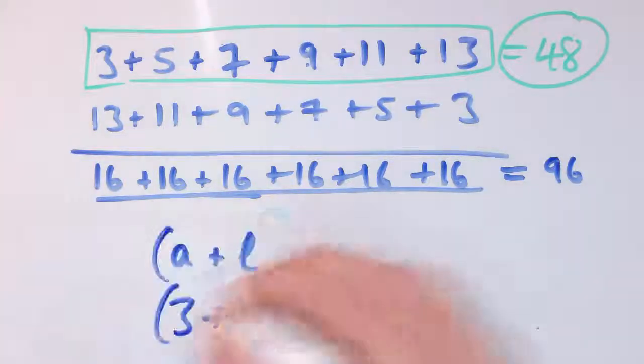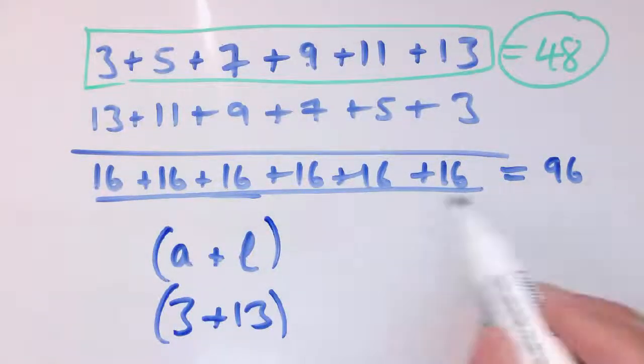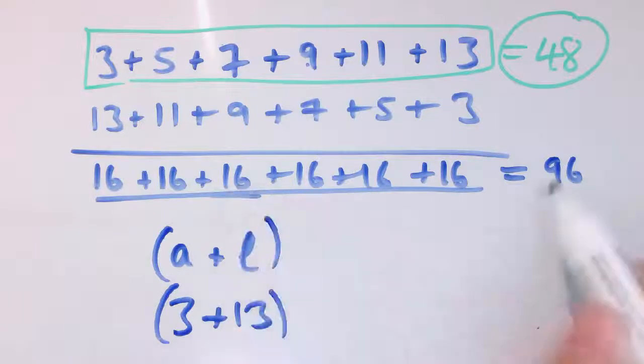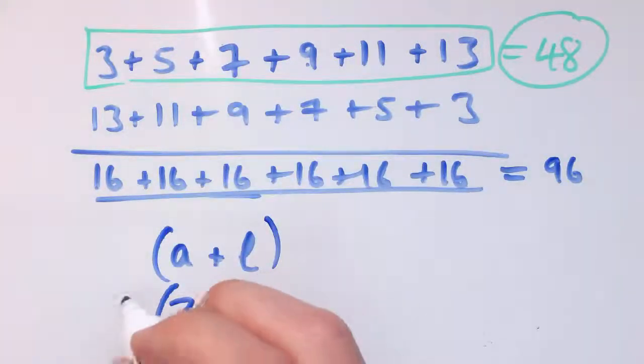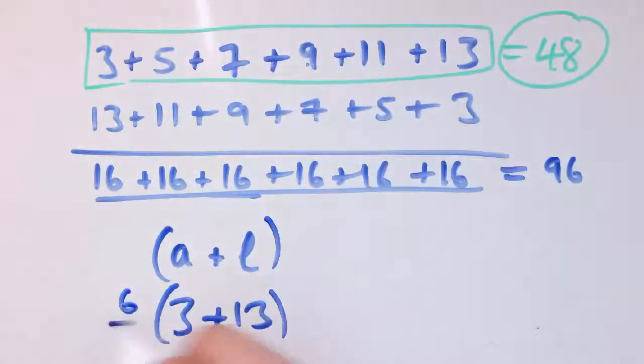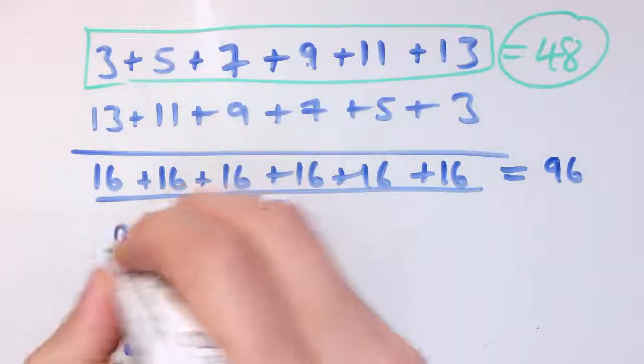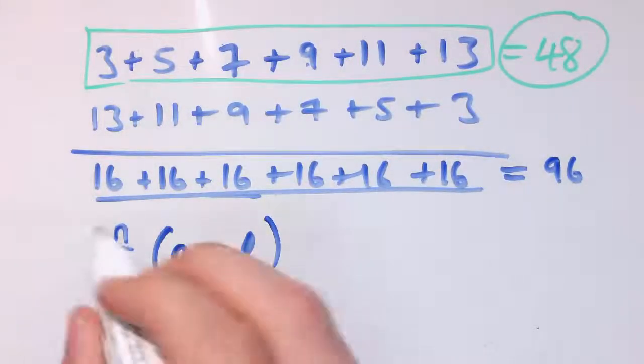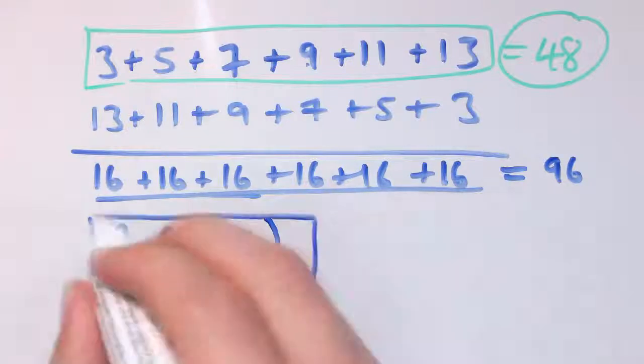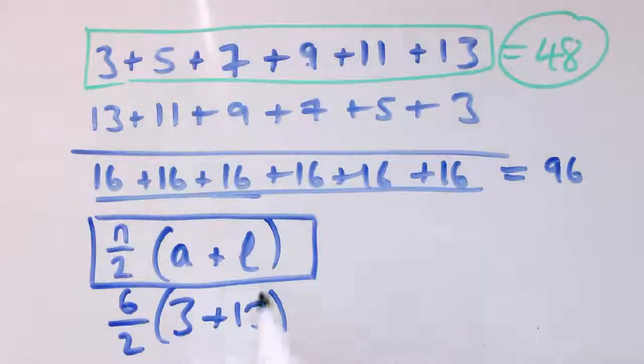And then I'm going to multiply that by the number of terms in the sequence divided by 2. Because I've added it up six times here, but then of course that meant I counted it all twice, so I needed to divide by 2. So I could say if there are n things I'm adding up, that the sum will be n over 2 times the first term plus the last term.